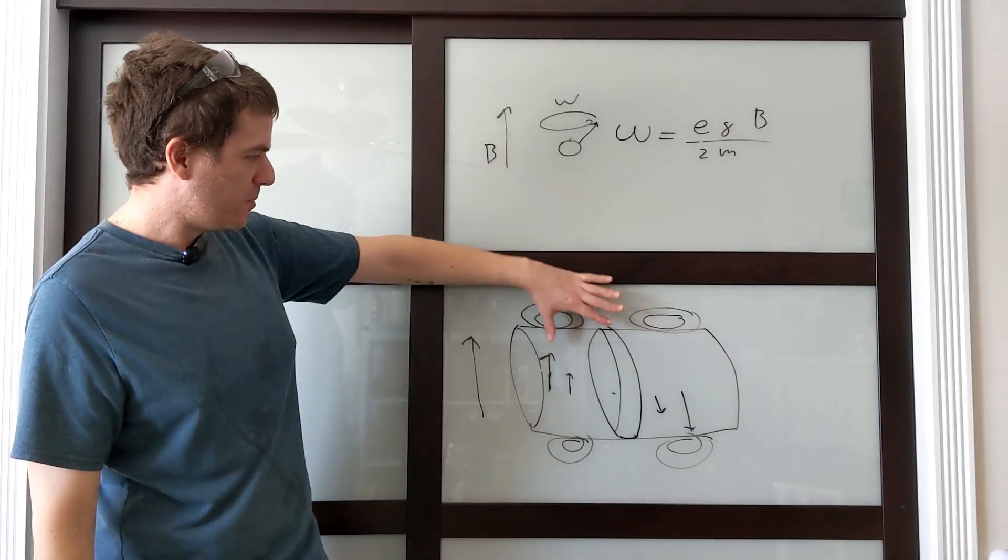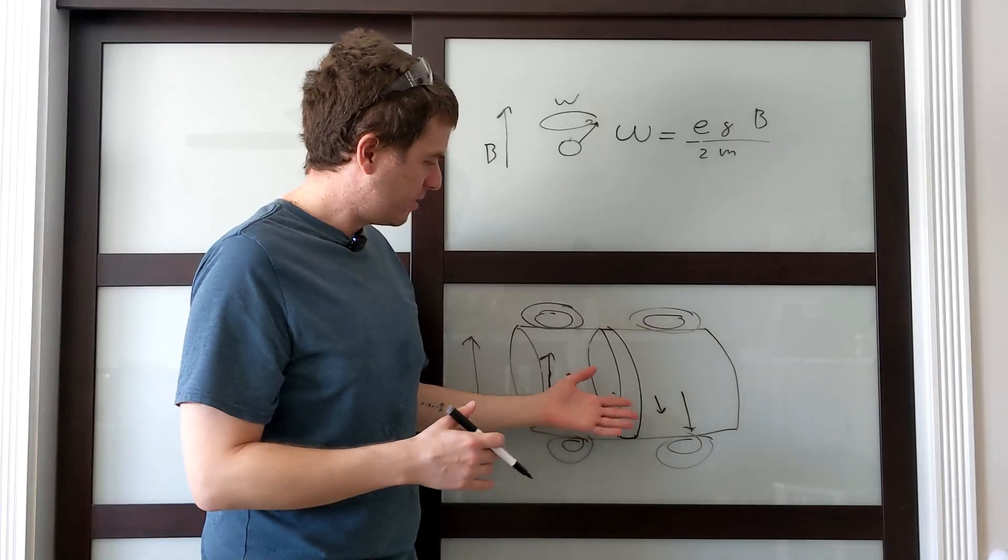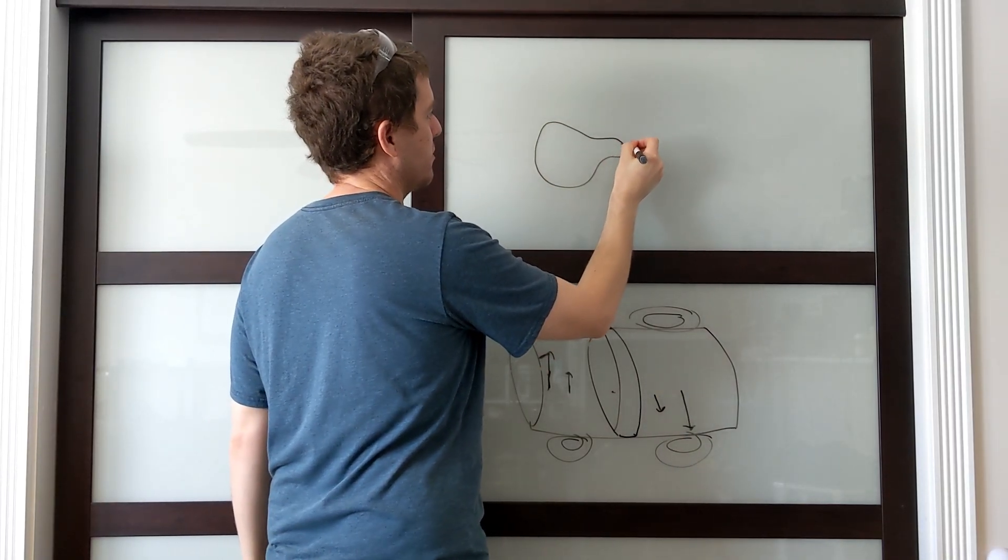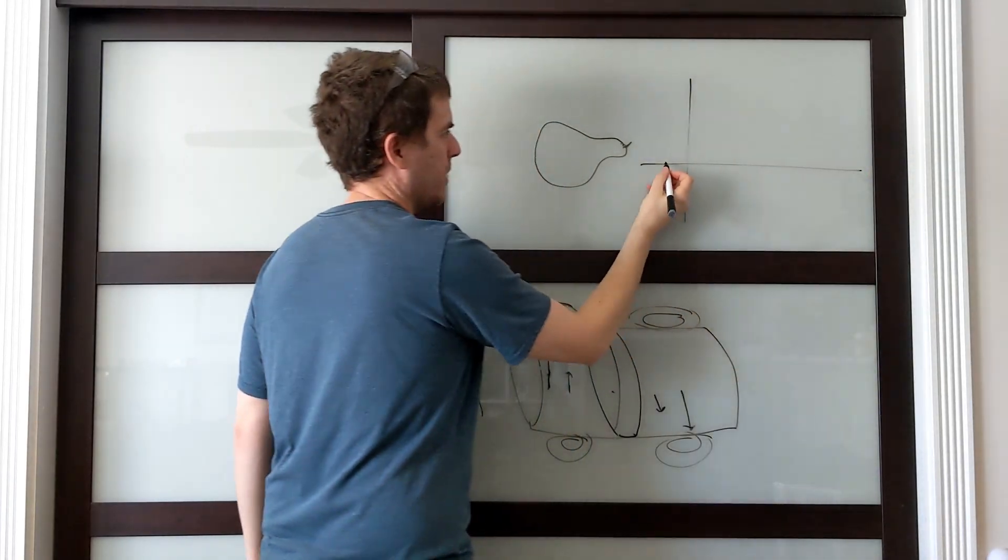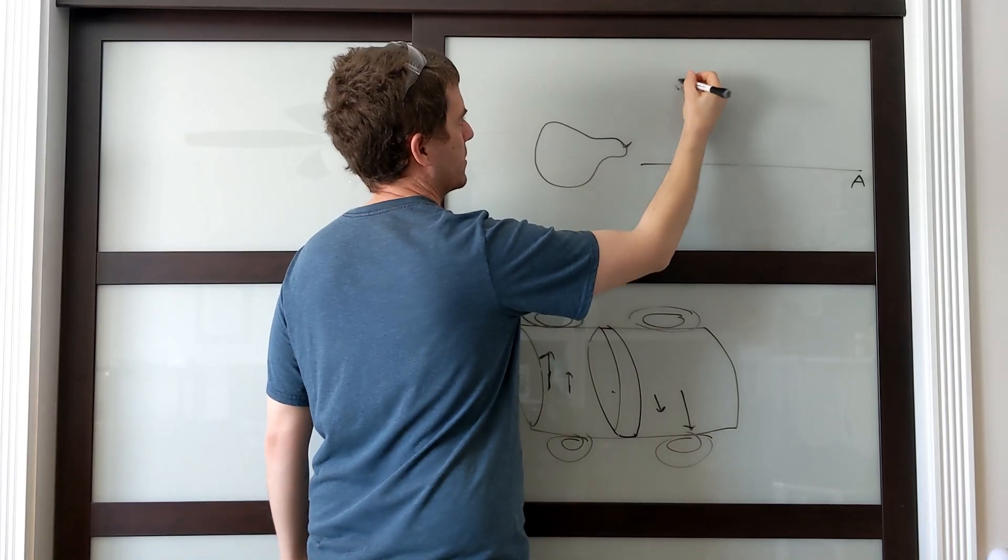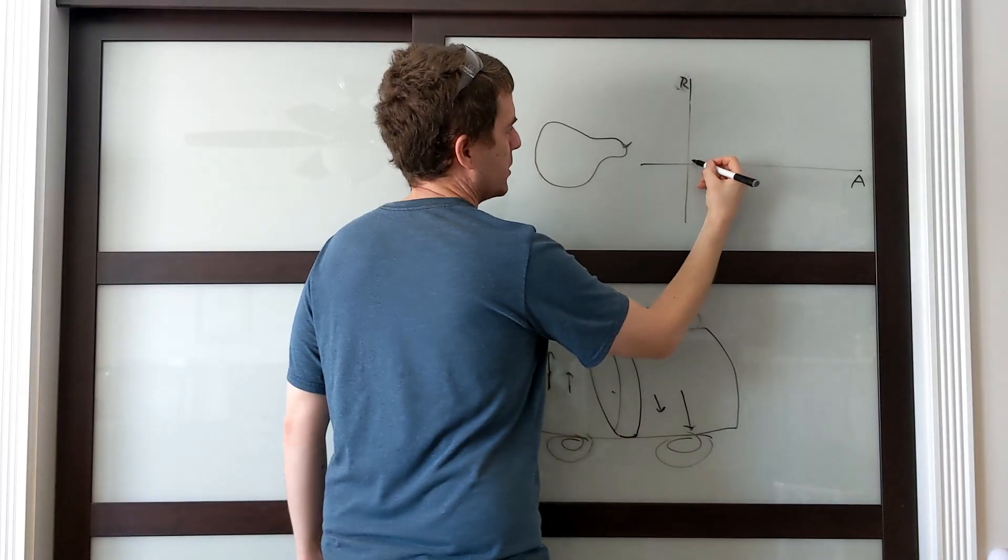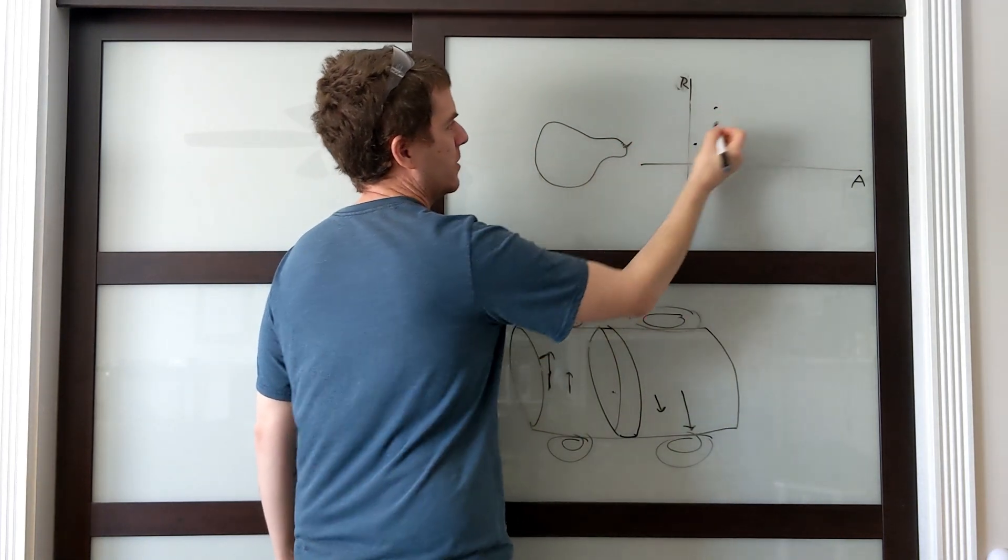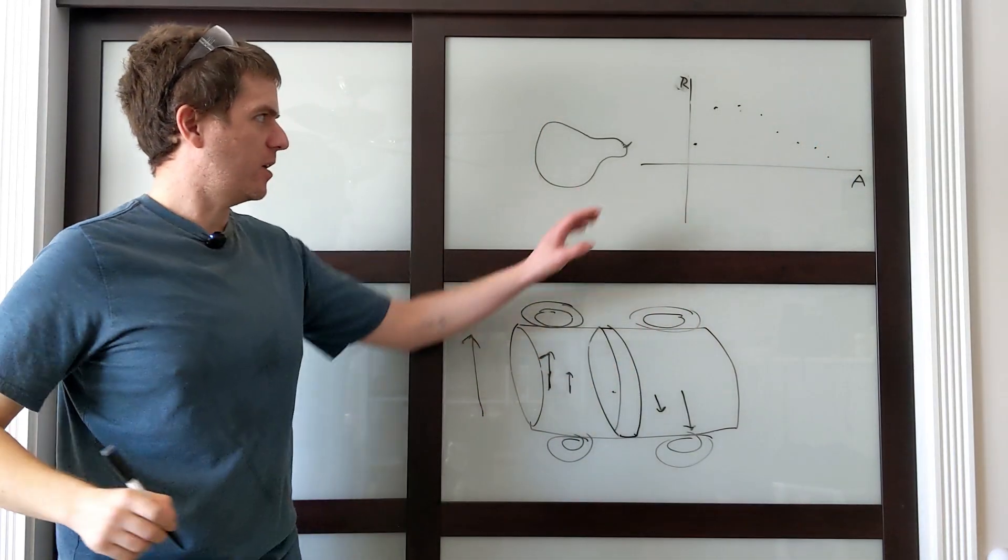By controlling how much current we put through the gradient coils, we can control which slice of this we're talking to, and so we can kind of map this out. For example, let's say we have a pear in our chamber. When we provide just a little bit of current in this direction—amps on this axis and response on this axis—providing just a little bit of current is going to only probe this slice. Then we add a little bit more current and now we get a response from this slice, and so on and so forth. As we go along, we get a silhouette of the object we're trying to map.